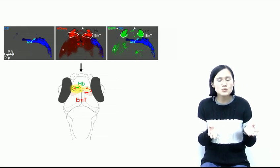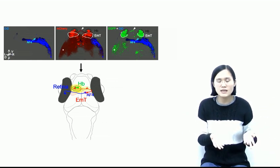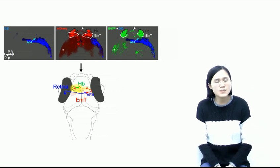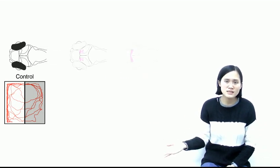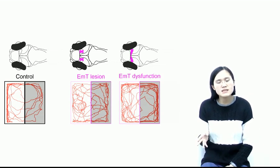EMT neurons are contacted mainly by retinal ganglion cells, the RGCs, at the arborization field, an area full of retinal recipient brain areas. Consistently, dysfunction of the EMT impaired light-preference behavior, suggesting the RGC-EMT-left dorsal habenula pathway mediates the light-preference behavior.